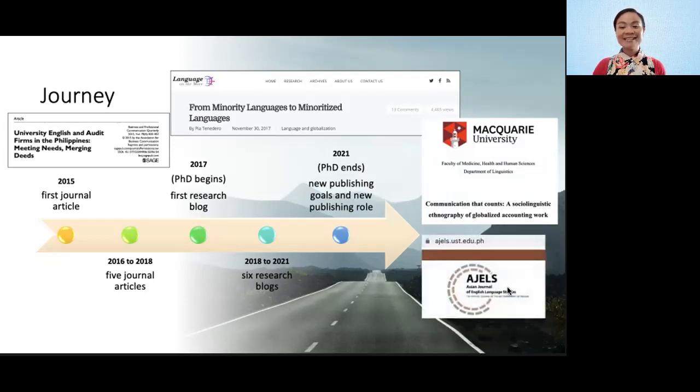This year, I was also made an editorial associate for the Asian Journal of English Language Studies. This is an international, peer-reviewed, open-access, non-predatory journal created by the UST English Department. Anyone can download the published articles in the journal's website, and we don't charge the authors for this. This new role has allowed me to begin to see the other side of the picture, where we review submissions.